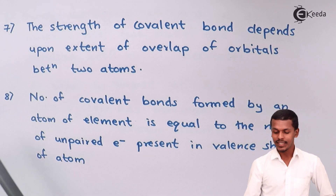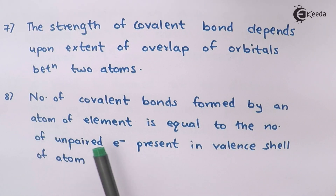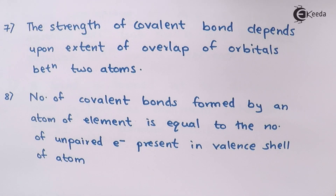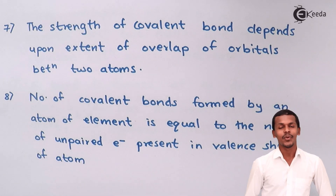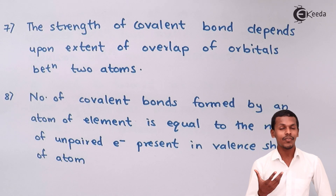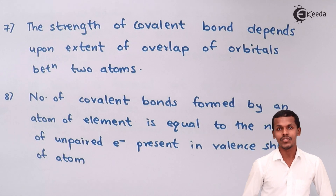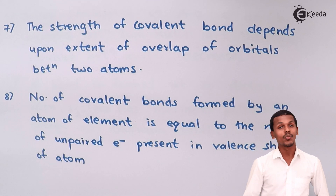The eighth postulate says: the number of covalent bonds formed by an atom is equal to the number of unpaired electrons present in its valence shell. For example, carbon has four valence electrons and forms four bonds. But for nitrogen, which has five electrons in its valence shell, only three of them form bonds — because we are talking about covalent bonds specifically.